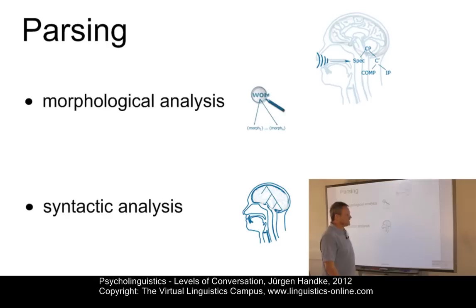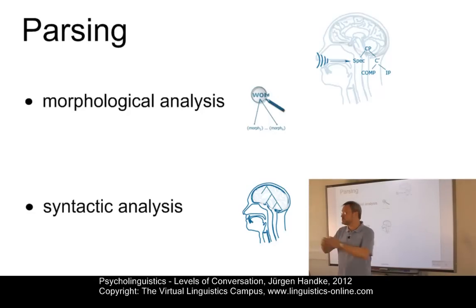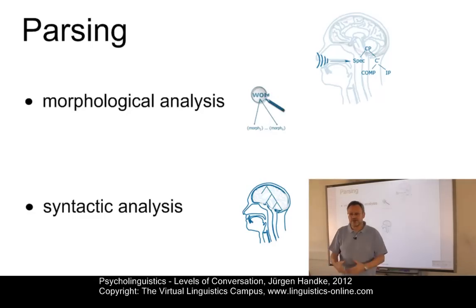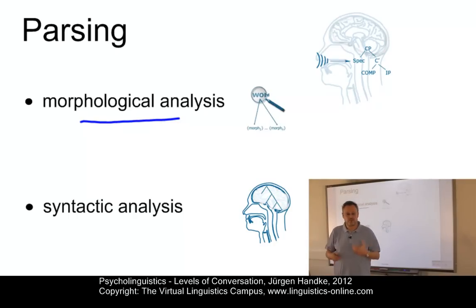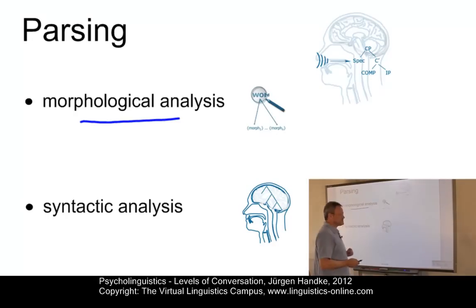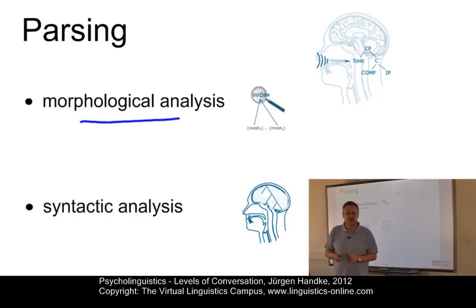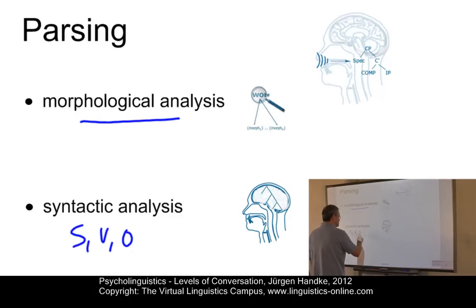The next level is called parsing. Parsing is an activity where, on the basis of lexical and morphological information associated with each element in a sentence, a functional structure is generated — a structure containing information about the subject, the verb, the object, etc. This involves two central activities: morphological analysis, where we analyze words into their morphs, and syntactic analysis, where the parsing process extracts the structural properties of a sentence and produces a representation containing syntactic aspects such as subject, verb, object, and information about tense, aspect, and more.